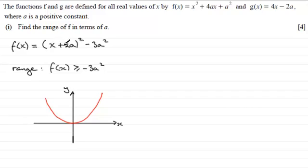And what we do to this graph of y equals x squared is we're looking at replacing the x with x plus 2a. And because a is a positive constant, this term is going to be positive. And what that does is it translates the graph 2a units to the left. So we'll imagine that's 2a units to the left.